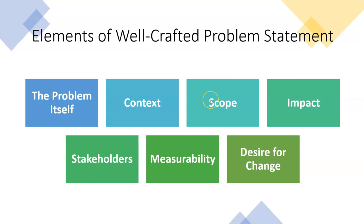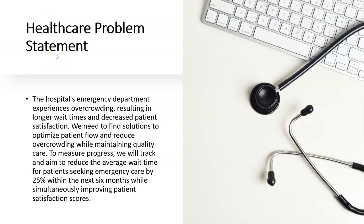So let's get to some examples. This is a healthcare example of a problem statement. It reads: 'The hospital's emergency department experiences overcrowding, resulting in longer wait times and decreased patient satisfaction. We need to identify solutions to optimize patient flow and reduce overcrowding while maintaining quality care. To measure progress, we will track and aim to reduce the average wait time for patients seeking emergency care by 25% within the next six months while simultaneously improving patient satisfaction scores.' Now I'm going to break this down and show you the core elements within this statement.